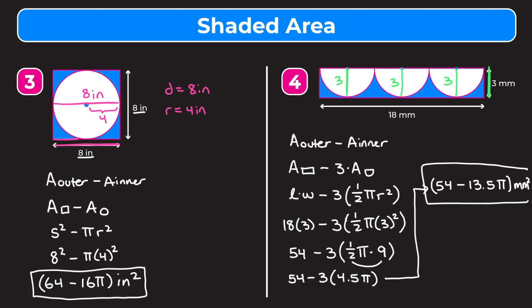Hopefully this video helped you understand how to find the shaded area of shapes. Just remember that you have to subtract the area of the inner shape or shapes from the area of the outer shape.